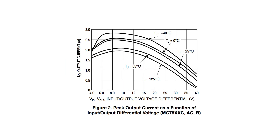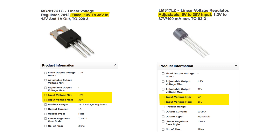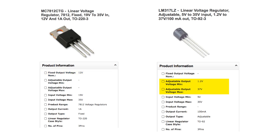Voltage regulators regulate voltage by automatically adjusting the amount of current flowing through a load in order to maintain a constant output voltage. They typically have an input voltage range, and can have either a single fixed output voltage or an adjustable output voltage range.